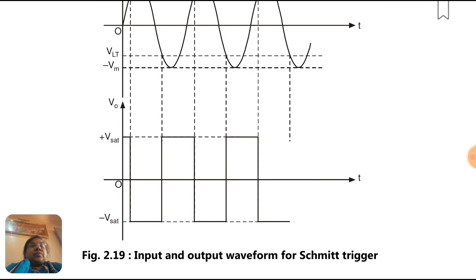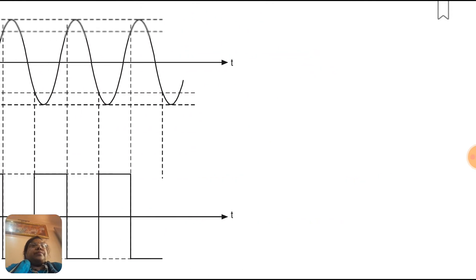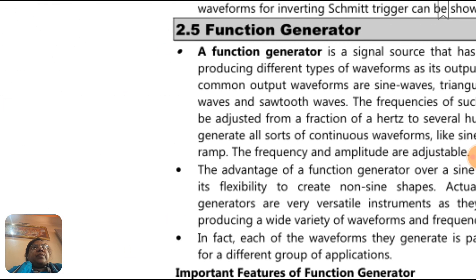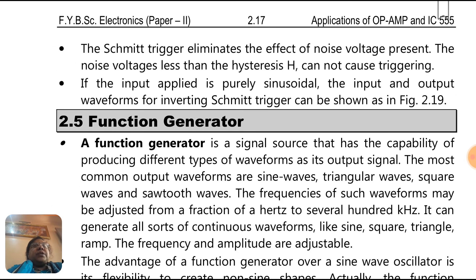This is the hysteresis curve. Input-output waveform for Schmidt trigger: sine wave is the input, square wave is the output. Now we will see the Schmidt trigger eliminates the effect of noise voltage present. The noise voltage less than the hysteresis H cannot cause triggering. If the input applied is purely sinusoidal, the input and output waveforms for inverting Schmidt trigger can be shown.